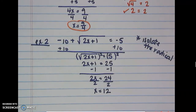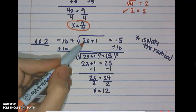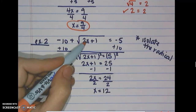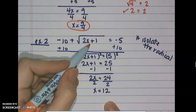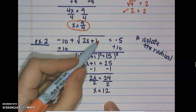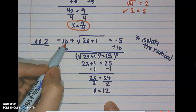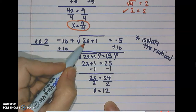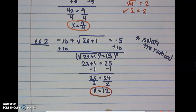Checking: 2 times 12 gives us 24, plus 1 is 25, the square root of 25 is 5, and negative 10 plus 5 is negative 5. It works.